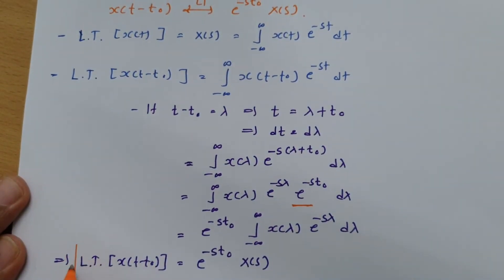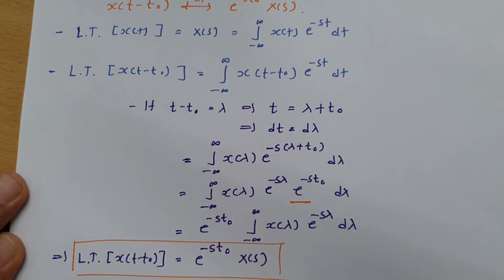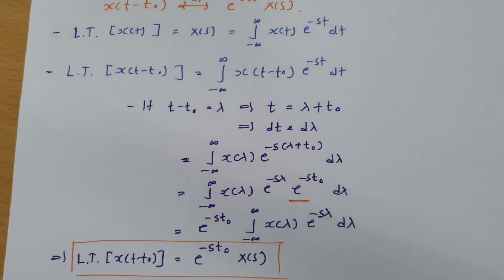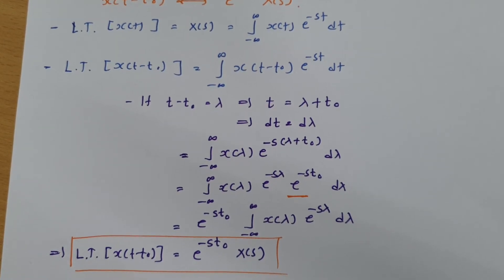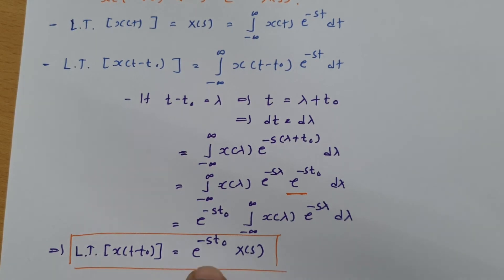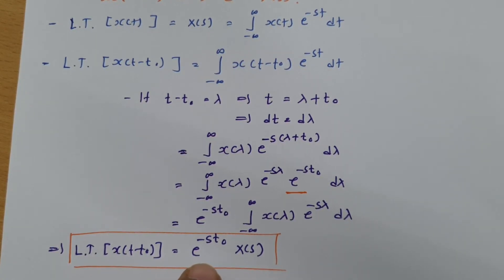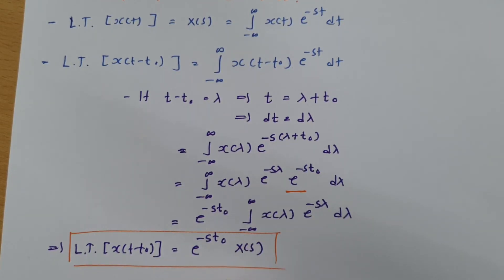So this is the time shifting property of Laplace transform. Whenever you are given any time shifted signal, all you need to do is multiply that shifted time period with e to the power minus s*t0 times X(s), and that gives the Laplace transform of the time shifted version of the signal.